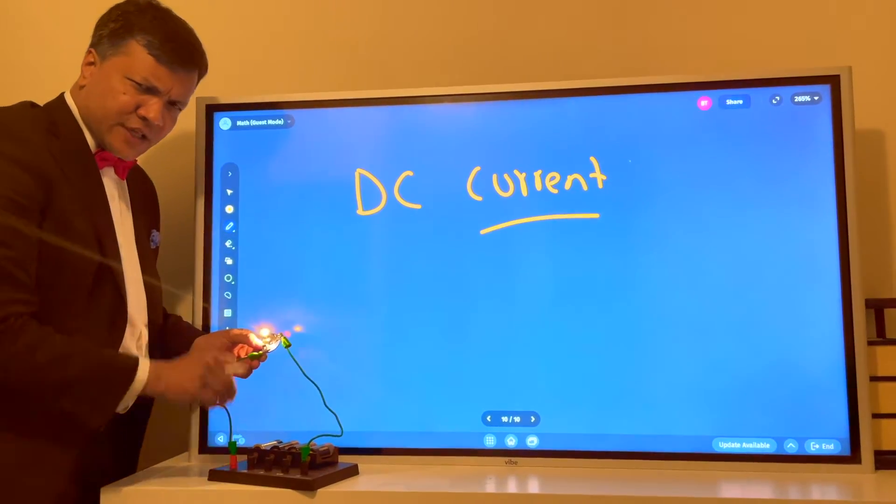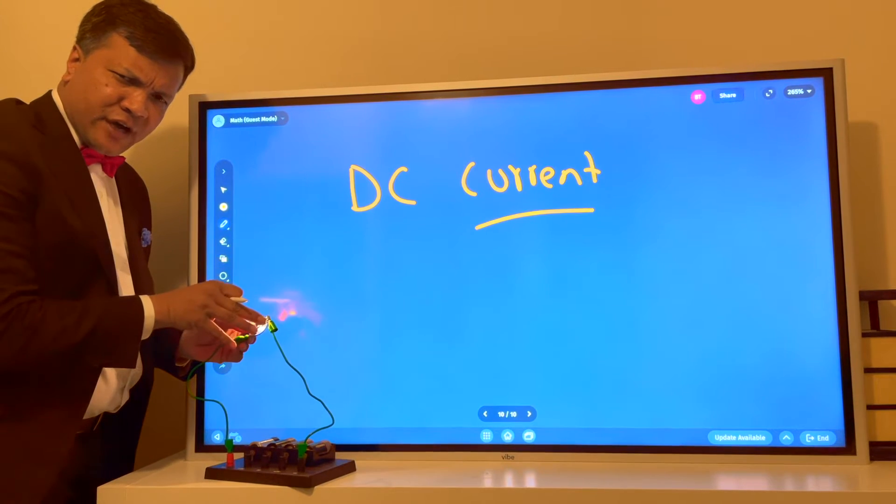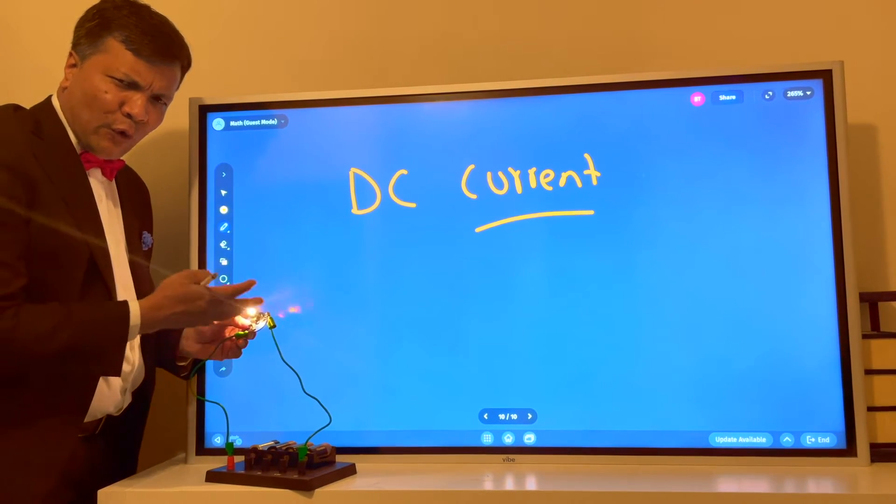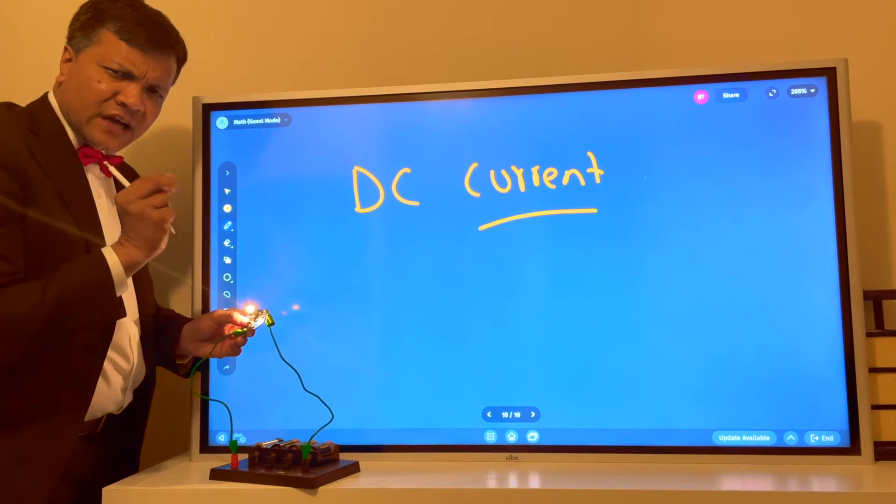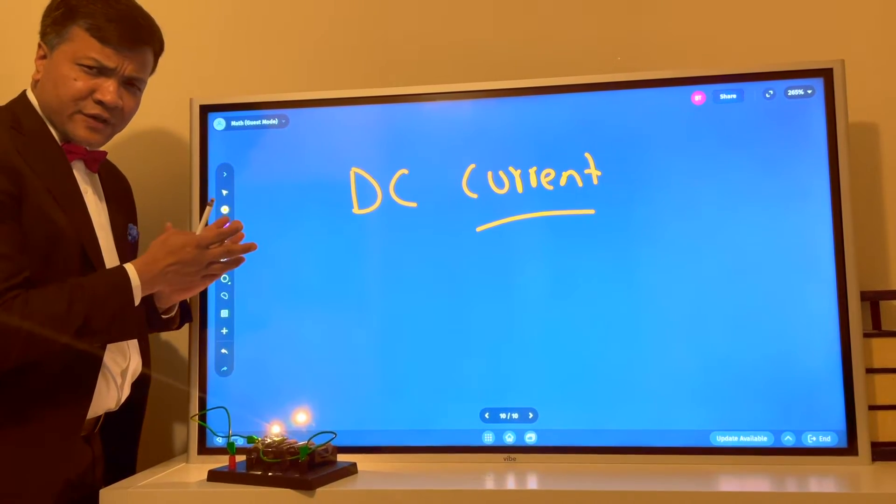I'm going to help you understand DC current. What makes it DC current or direct current is that the electron flows only one direction. Current flows only one direction. And that's what I'm going to explain in this video.